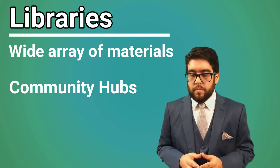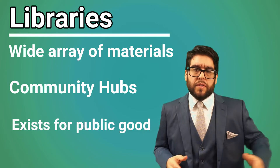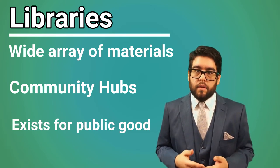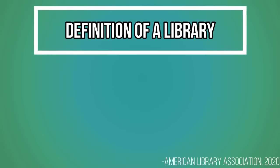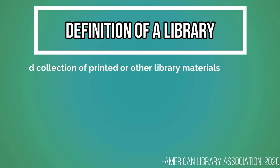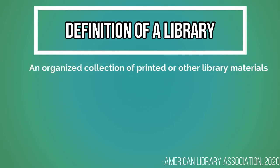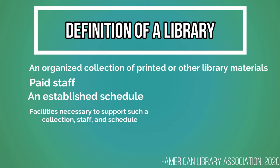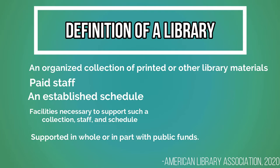You don't need to be able to afford your own computer or your own personal collection of books. It is an institution that exists for the public good. The American Library Association's definition includes: public libraries should have an organized collection of printed or other library materials, paid staff, an established schedule in which services of the staff are available to the public, the facilities necessary to support such a collection and staff and schedule, and it is supported in part or in whole with public funds.